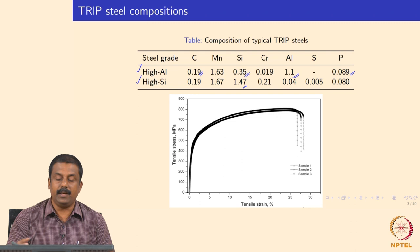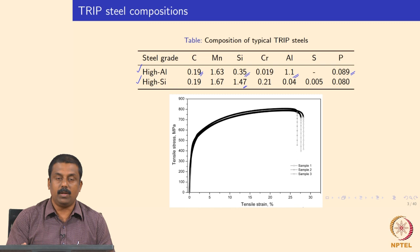We will see the effect of each individual alloying element during welding in subsequent slides and lectures. For now, we can note that TRIP steel can be made with two different composition ranges: one is aluminum-based TRIP steel and the other is silicon-based TRIP steel. In aluminum-based TRIP steel, we stabilize retained austenite by adding about 1% aluminum, and in silicon-based TRIP steel, we add about 1.5% silicon.